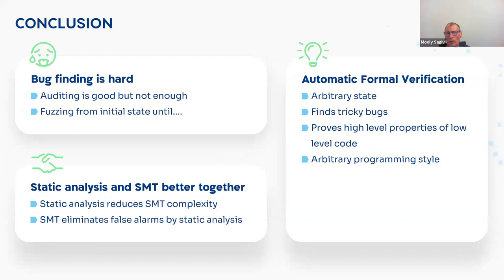To conclude: bug finding is very hard. In smart contracts, which are event-driven, fuzzing is a good technique but doesn't find many errors. Static analysis and SMT — which is what we implement — work better together: the static analysis reduces the SMT complexity, and the SMT mathematical solving reduces the false positives and false negatives you get from tools like Slither. We implemented automatic formal verification that starts in an arbitrary state, finds tricky bugs, can prove high-level properties like solvency, and does not restrict your programming style — you can write imperatively, functionally, or object-oriented.